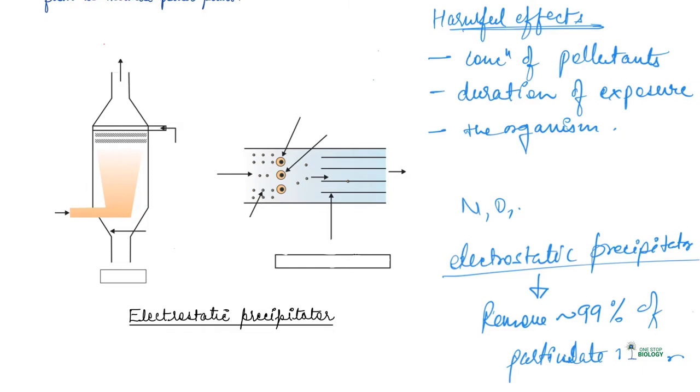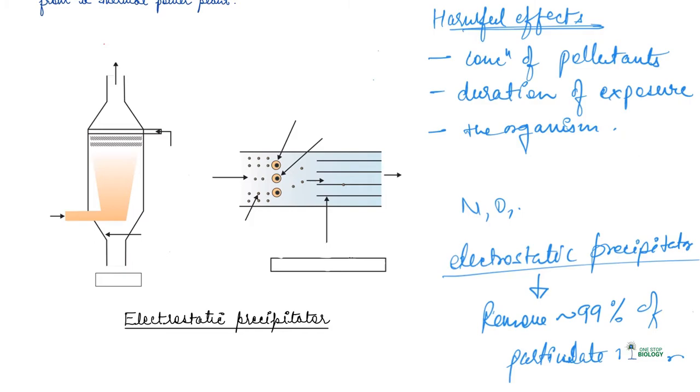Recently we have realized the dangers of particulate matter which are very, very small and which cannot be removed by these precipitators as well. If you see the diagram here, this is the scrubber. Here, dirty air will be passed inside, the particulate matter will be deposited, water or lime is sprayed inside and clean air will come out.